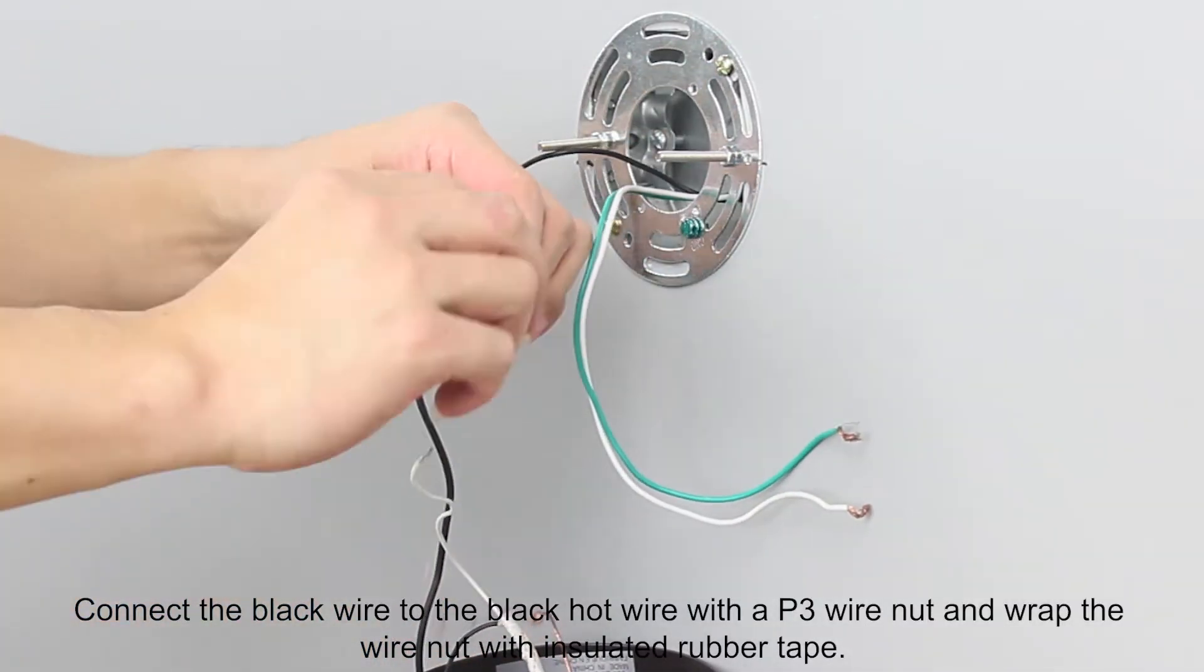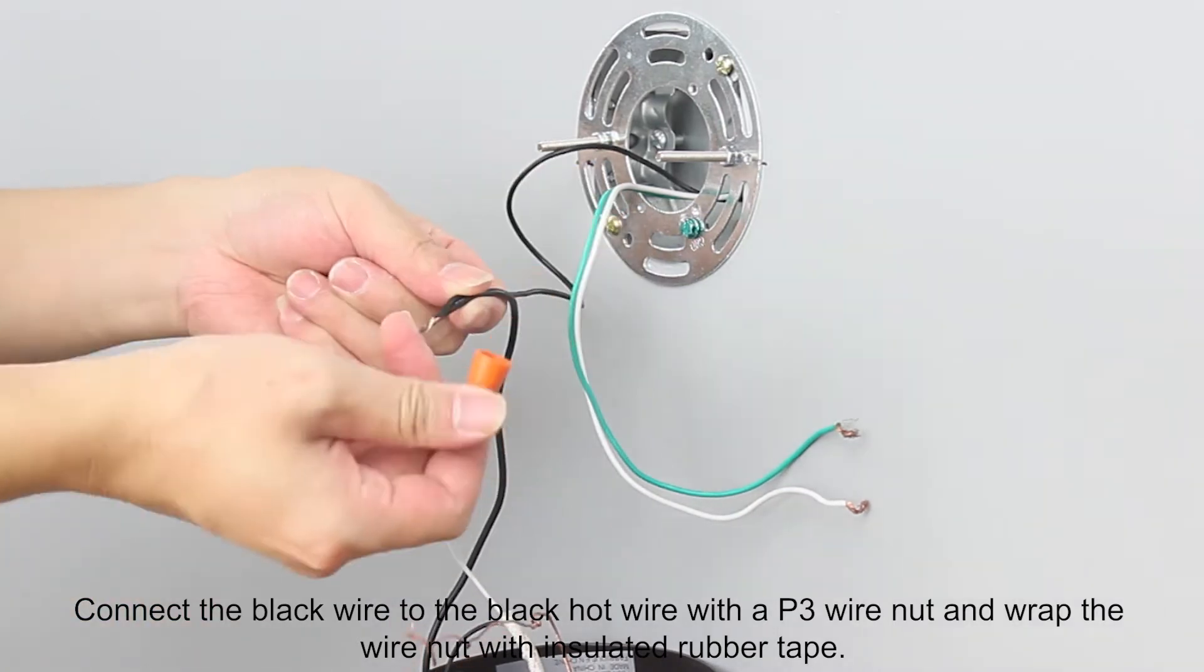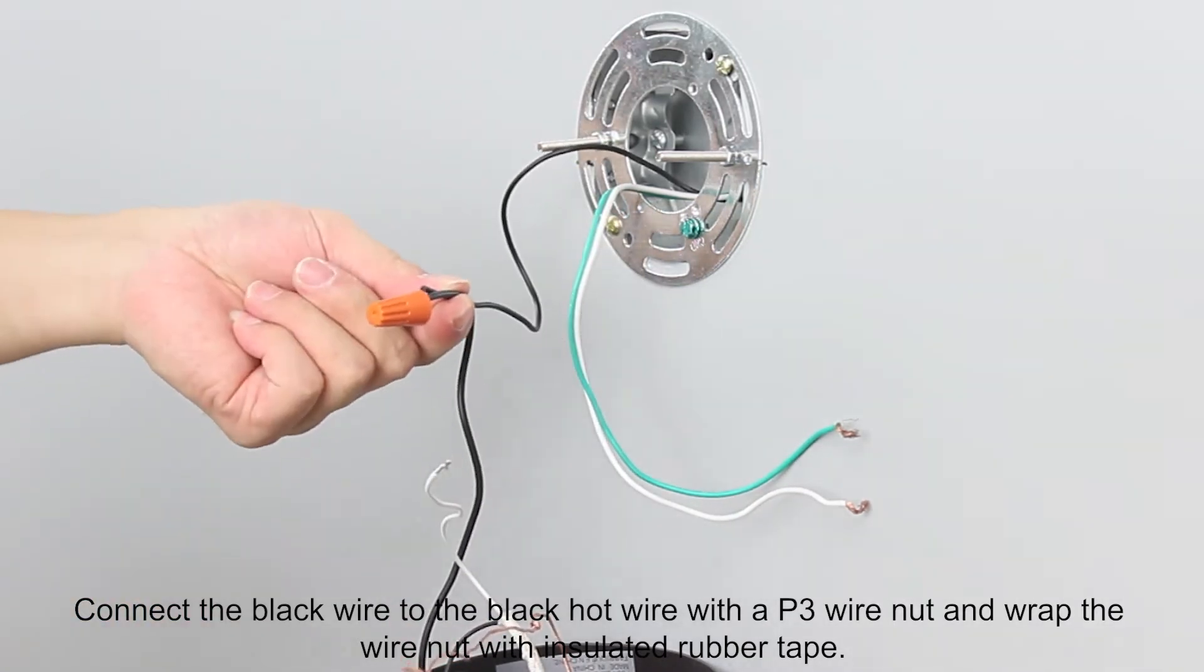Connect the black wire to the black hot wire with a P3 wire nut and wrap the wire nut with insulated rubber tape.